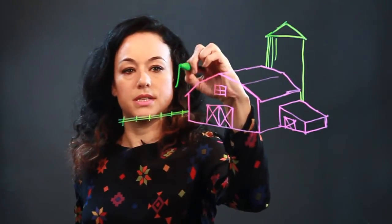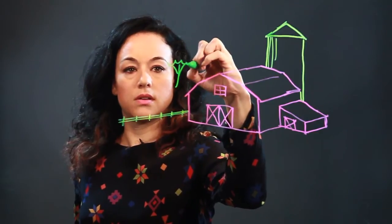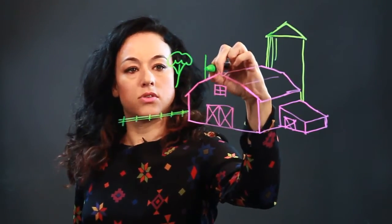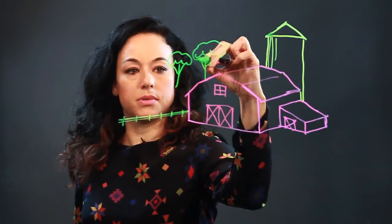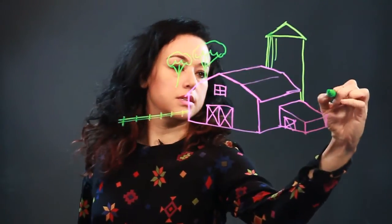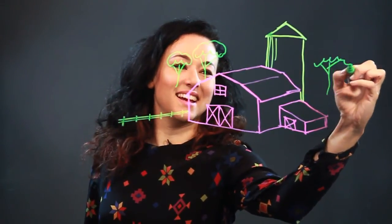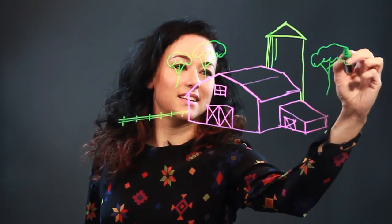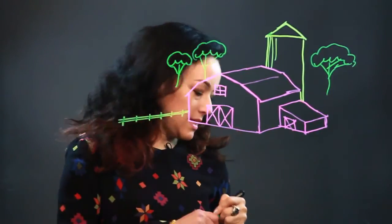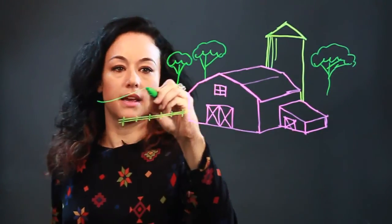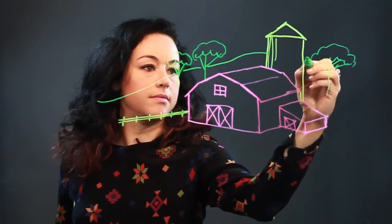And I put some trees in, and some more trees. Real simple trees — happy little trees. And I just draw those in like that. And there's like a sloping country hillside.